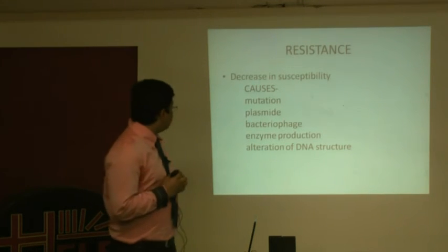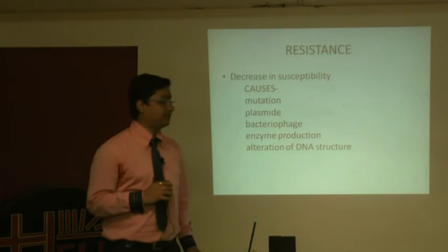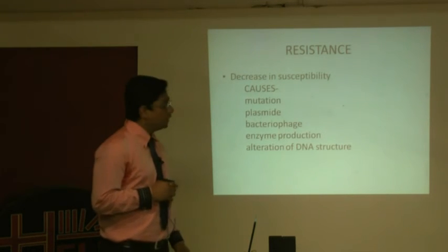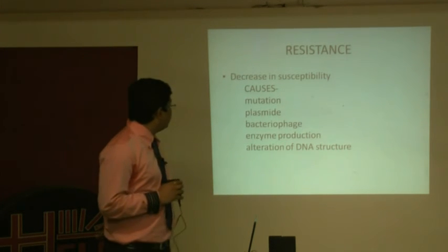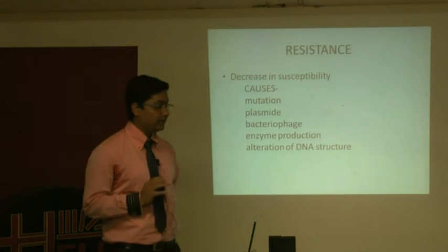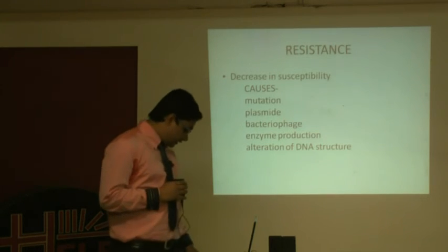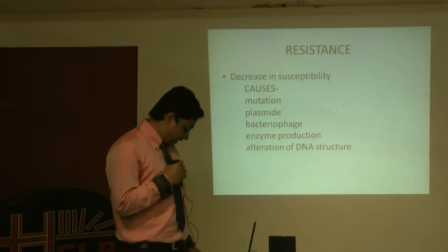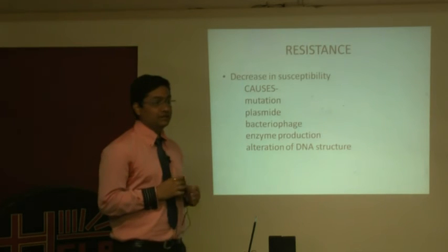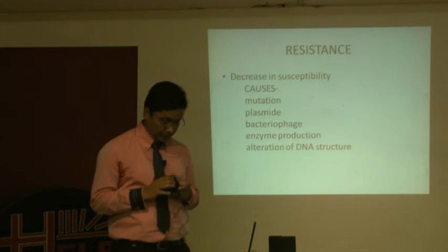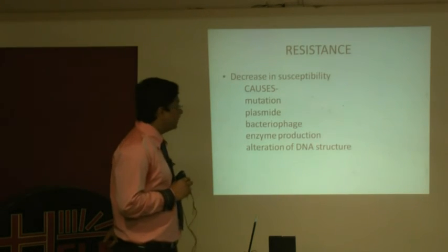The second topic is resistance in bacteria in general. Resistance is defined as the decrease in susceptibility of an organism to a particular drug to which it was earlier susceptible. Due to various mechanisms, the bacteria develop resistance and the drug can no longer be effectively used. The causes include mutations — changes in the genetic makeup of bacteria — which occur from time to time according to Darwin's theory of adaptation to increase survival.